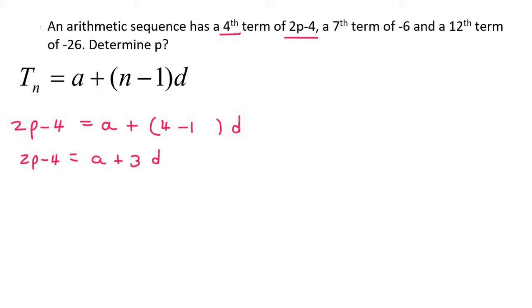Three unknowns. That's quite interesting. Then they say a seventh term equals minus 6. So we can say minus 6 equals a plus, now it's a seventh term, so 7 minus 1 times d. Now I sort of see how this is going to play out. So we're going to say minus 6 equals a plus 6d.